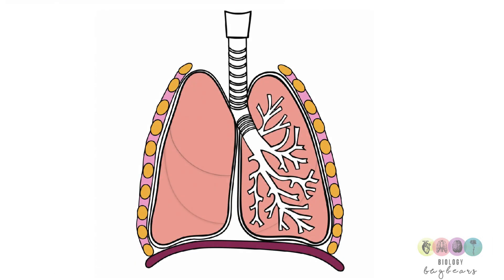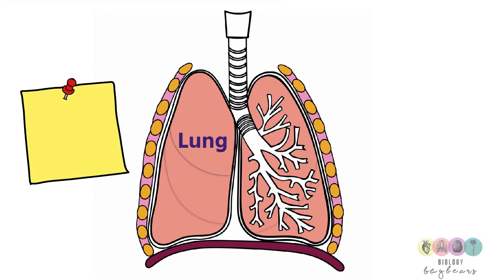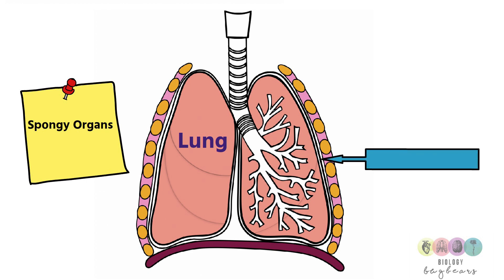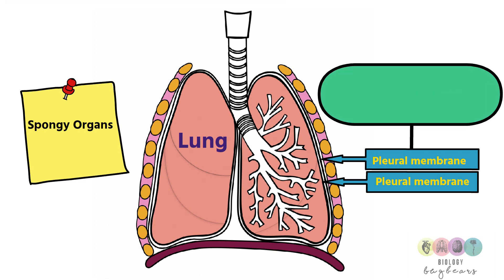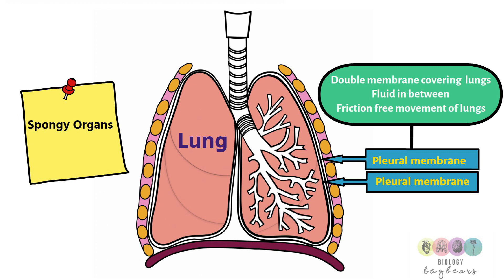Your lungs are located in your thorax or chest cavity, and you have two lungs. They are spongy organs, very light, filled with air. Your lungs are surrounded by two membranes called pleural membranes, and in between both membranes a fluid is secreted — this allows for the friction-free movement of the lungs. Think of your lungs surrounded by these two membranes which are very close together except for a little layer of liquid in between them.